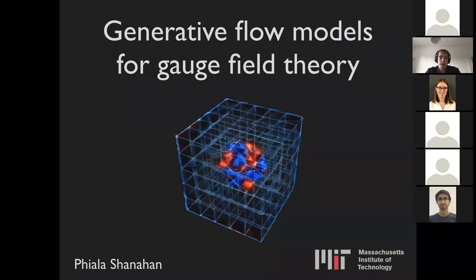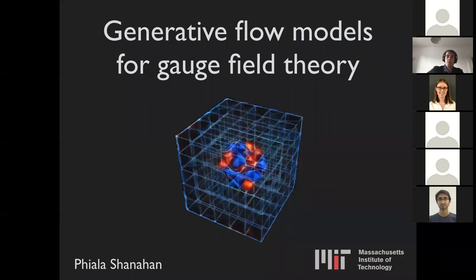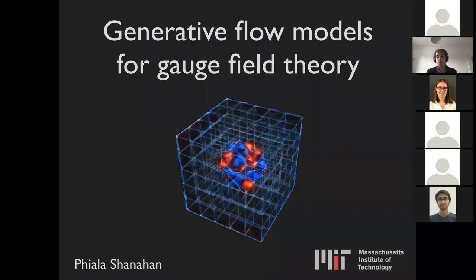We are very happy to have Fiala Shannon today. Fiala is currently Assistant Professor of Physics at MIT. She's working on various aspects of theoretical nuclear and particle physics. One aspect of her work is on overcoming computational limitations in QCD calculations, particularly using modern machine learning techniques. Today she will tell us about recent work in this direction and how to build symmetries into generative flow models.